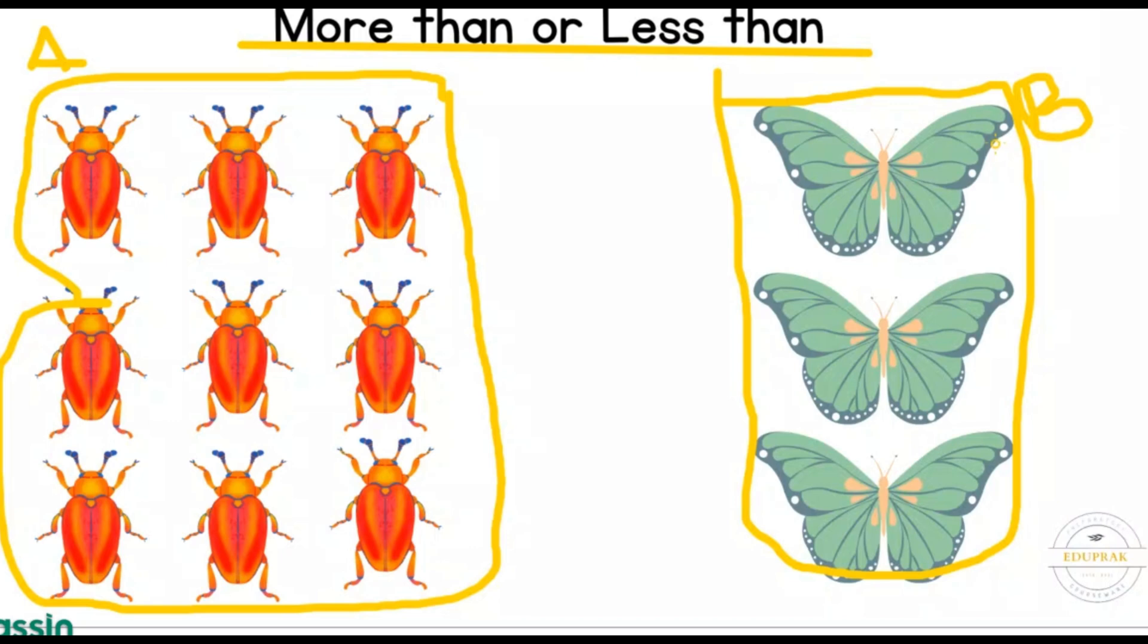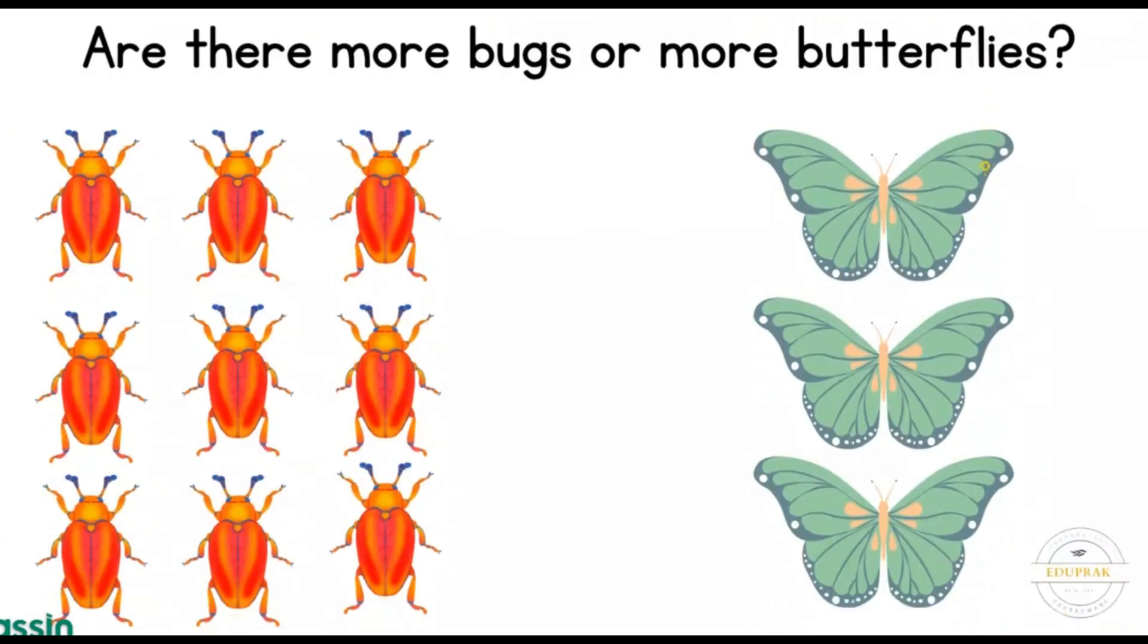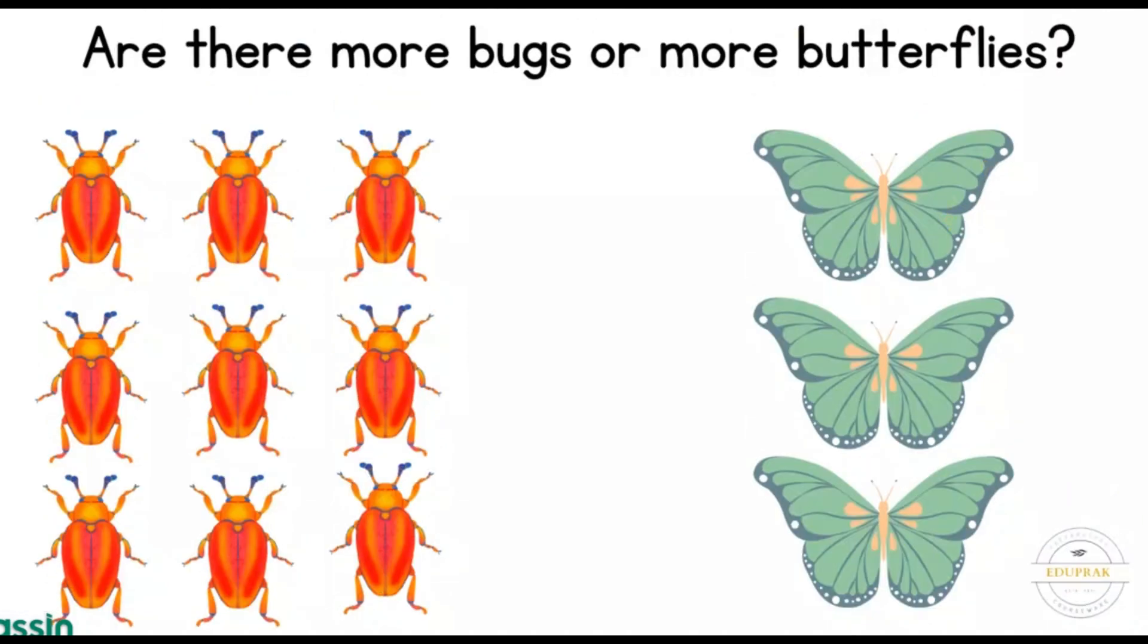Can you tell me which side has more insects, Group A or Group B? Are there more bugs or more butterflies? There are more bugs. Group A has more than Group B.